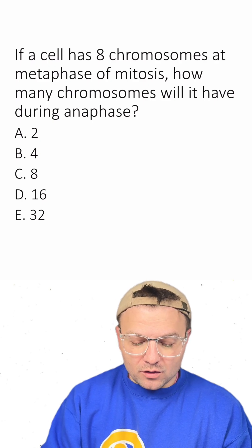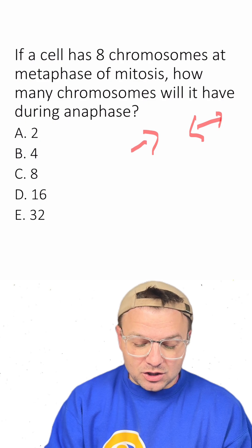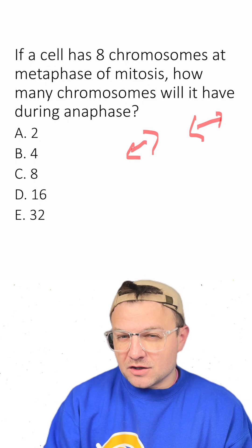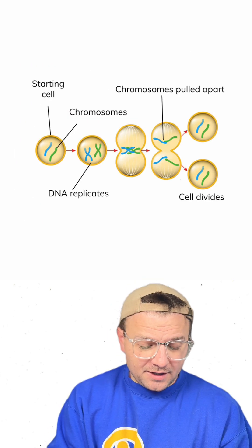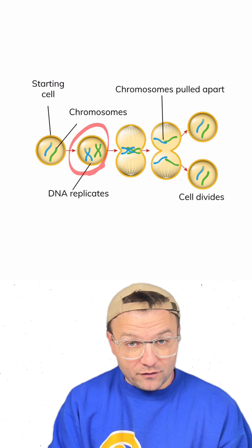Now, even though the chromosomes have split and each chromatid is going in a different direction, they're still individual chromosomes. We can see here that our cell has two chromosomes with four chromatids.